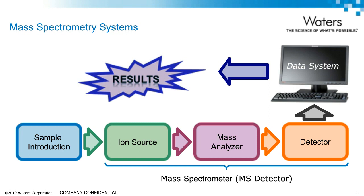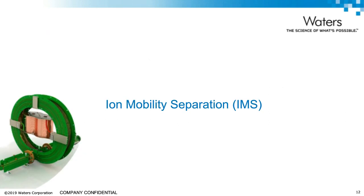Ion mobility as a technique was first developed in the fifties and sixties by Earl McDaniel at Georgia Tech. A standalone ion mobility system has been used for a while, especially in homeland security applications around airports. Only in the last fifteen years has ion mobility coupled with mass spec grown significantly, with the introduction of commercially available ion mobility mass spec systems such as Synapt.